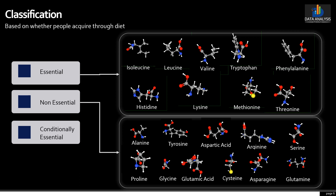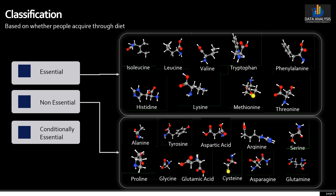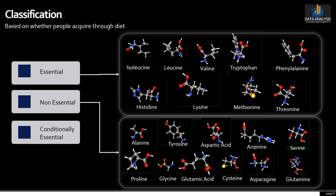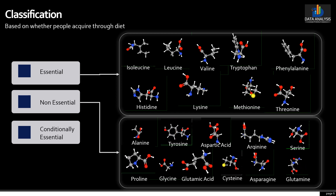The second group is non-essential amino acids — amino acids that our body produces even if we do not get them from the food we eat. Non-essential amino acids include alanine, arginine, asparagine, aspartic acid, cysteine, glutamic acid, glutamine, glycine, proline, serine, and tyrosine.